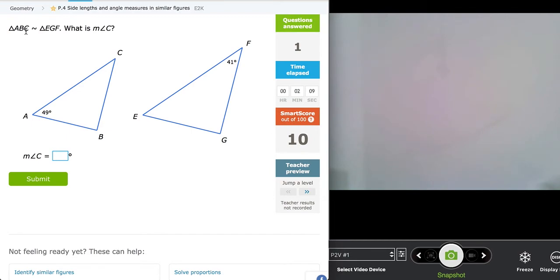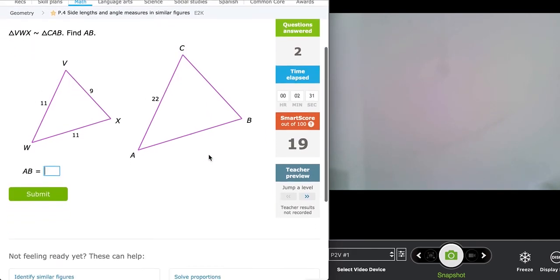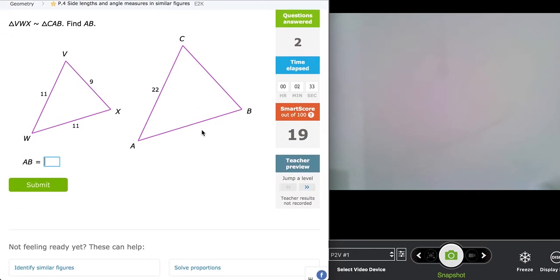Angle C is related to which angle? It is similar to this one here, F. That means the angle measurements are the exact same measurement. Angle C has to measure whatever angle F measures. And because angle F happens to measure 41 degrees, angle C is also 41 degrees.